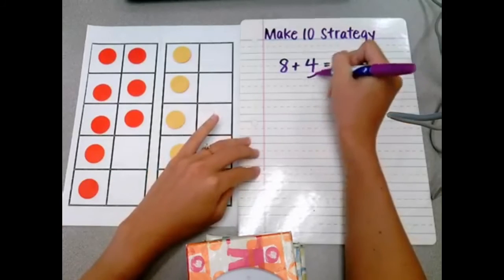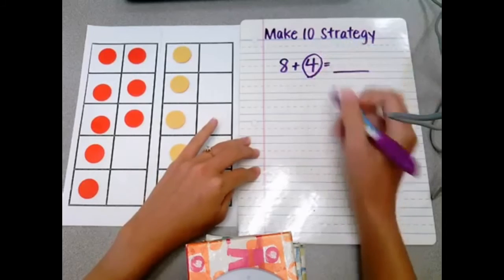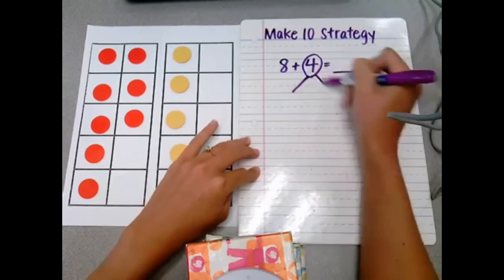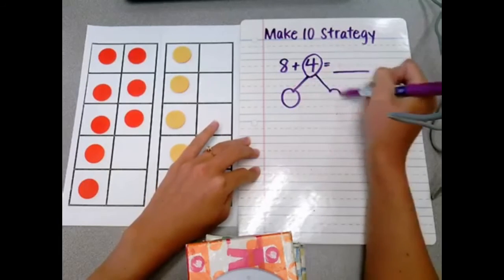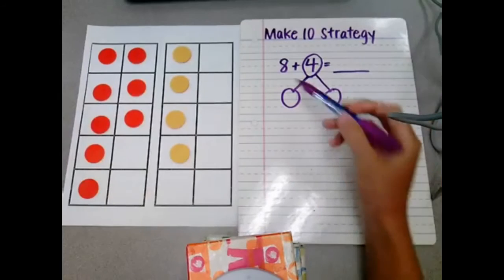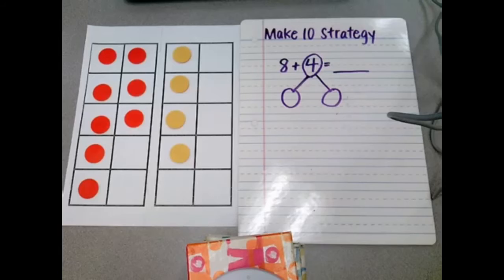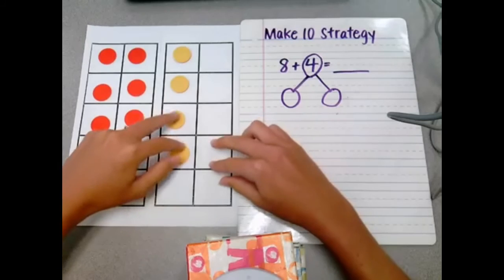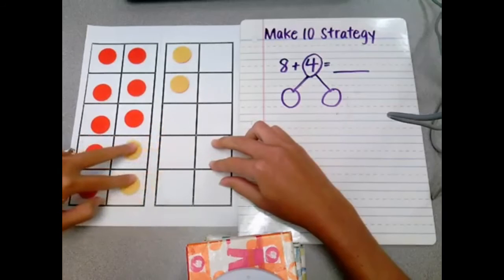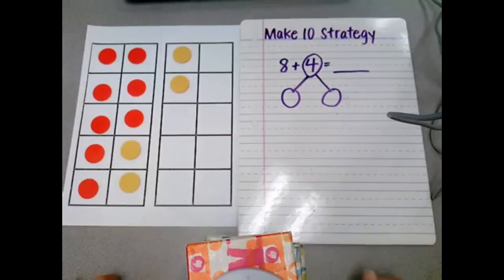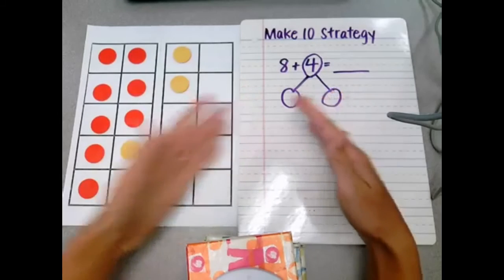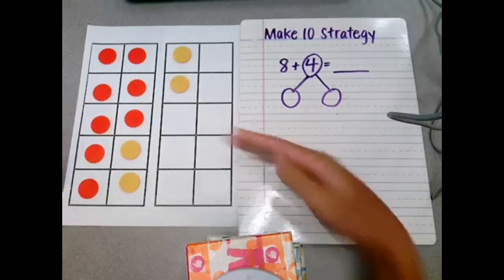And now we want to make 10. So what we're going to do is we're going to decompose this number 4 into a number bond. Essentially, we're asking ourselves, okay, what do we need to make this 8 into a 10? And I tell the kids this is where the magic happens. So the magic happens when we move 2 over to complete the 10 frame. We took the 2 from the 4 and made it into a complete 10 frame.